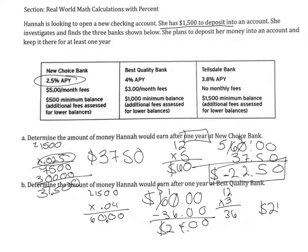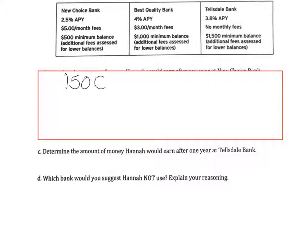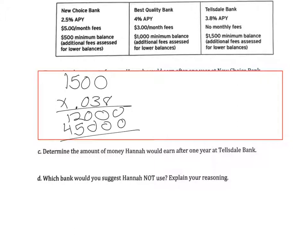Best Quality Bank gives a positive $24 because her APY was greater than her fees. Remember, APY tells us how much money the bank will make for us by having money in the account. For Tellsdale Bank, we do $1,500 × 0.038 APY. Working through the multiplication with three decimal places, this gives $57 in APY. And Tellsdale has no monthly fees, so this is just $57.